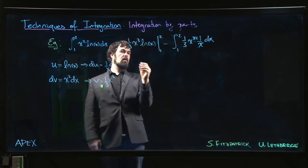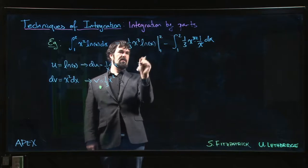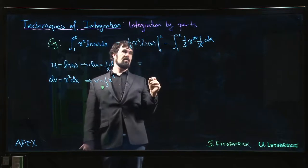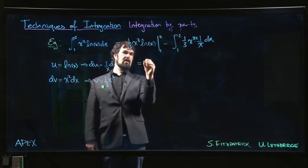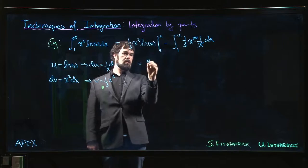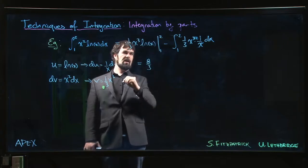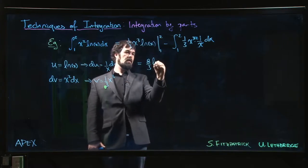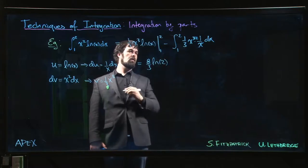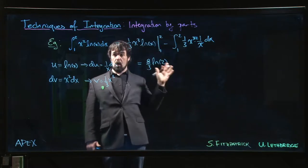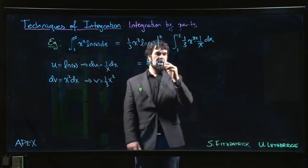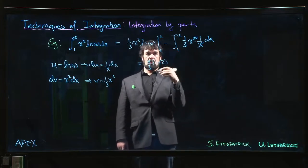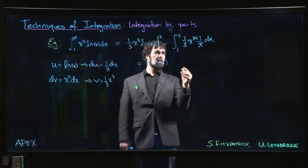And so now what we can do is in the next step we can already evaluate this part. We can put in those limits of integration. So the upper limit we get 8—2 cubed is 8—8 over 3 times the natural log of 2. Well, natural log of 1 is 0, so we have minus one third log 1, but that's just 0 so we don't bother writing it.